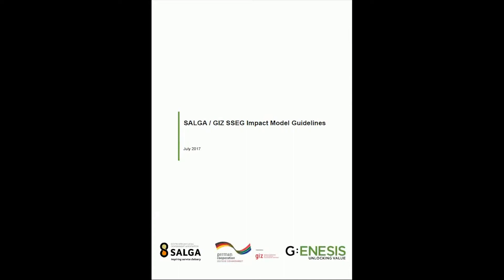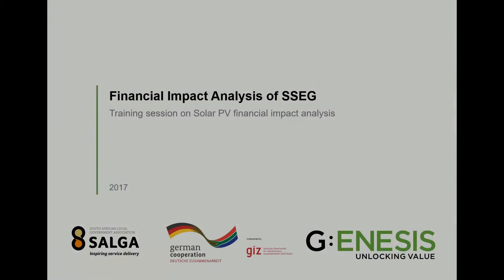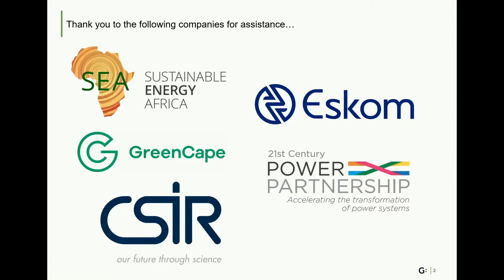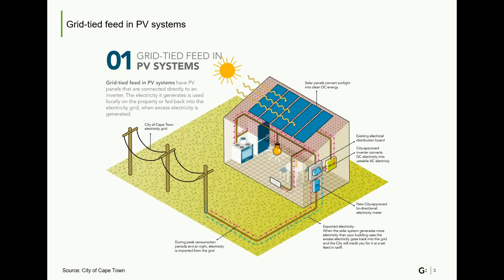Before we look at the actual model, I'd like to take you through a number of slides to introduce the model and provide some context. The model has taken a couple of years to develop and has been through a number of iterations. It is important to have a common understanding of what a grid-tied feed-in solar PV system looks like. Grid-tied feed-in PV systems have PV panels that are connected directly to an inverter. The electricity it generates is used locally on the property or fed back into the electricity grid when excess electricity is generated.